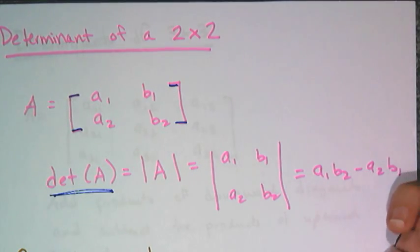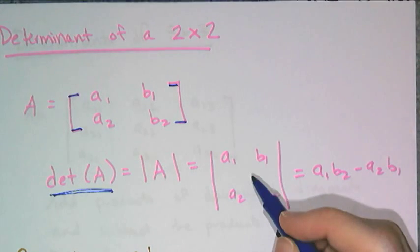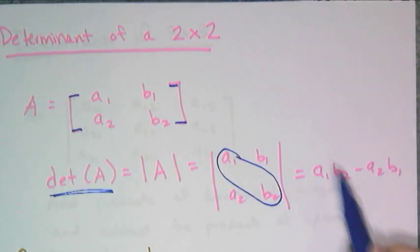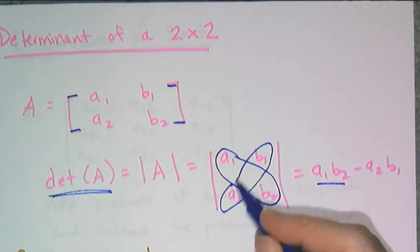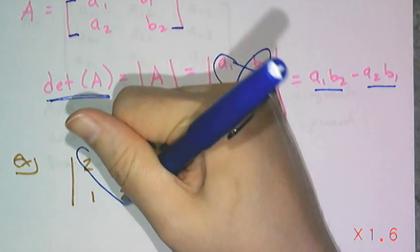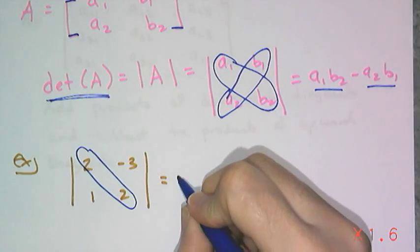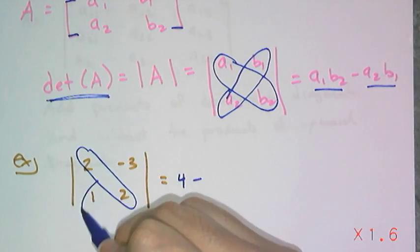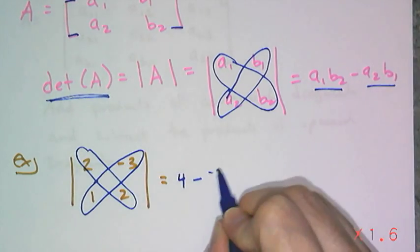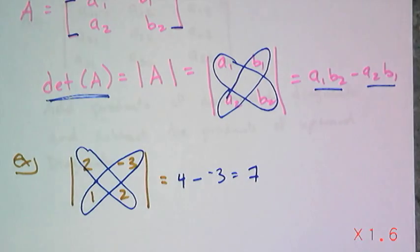We know from looking for the formula for an inverse of a 2 by 2, that I multiply these two, and I multiply these two, and I subtract them, and that's the determinant. Multiply the main diagonal, 2 times 2 is 4, subtract off the other two numbers multiplied together, which is negative 3, which gives me a determinant of 7.